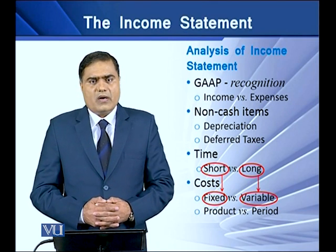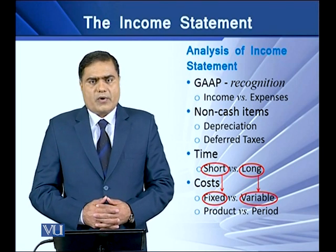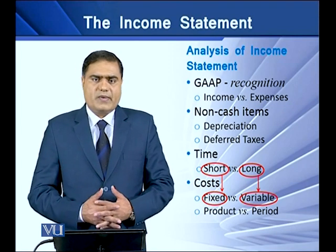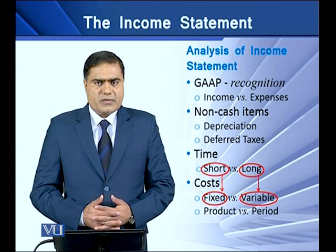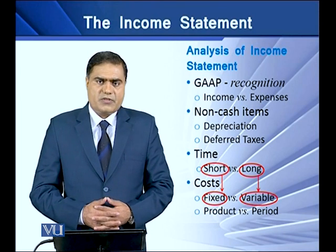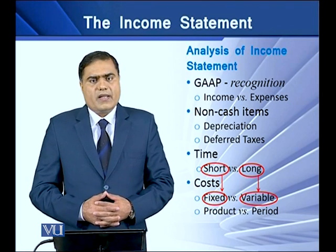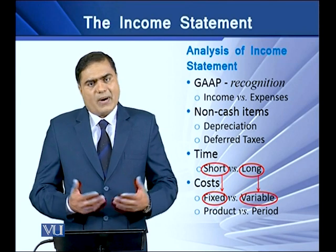Other costs are called period costs. These are the costs that don't become part of the product cost; rather, they are charged to the period as period expenses. Examples include depreciation, salaries, rent, and insurance. In a broader sense, we can say that administrative cost, marketing cost, and interest cost are period costs.